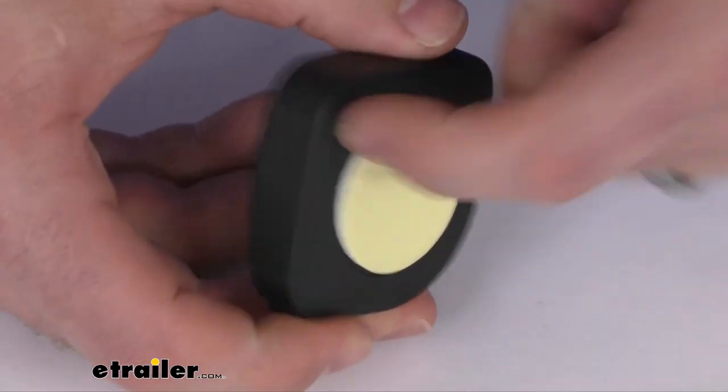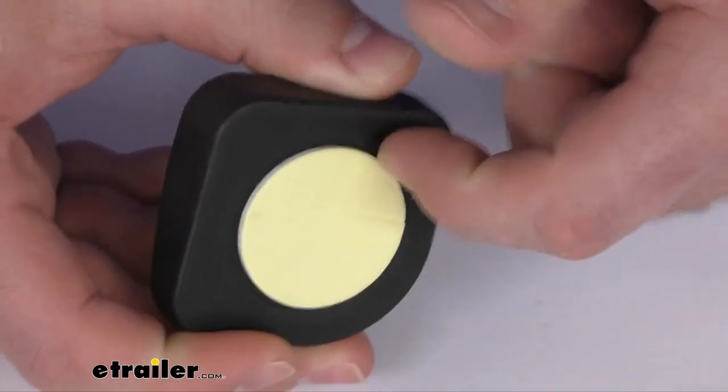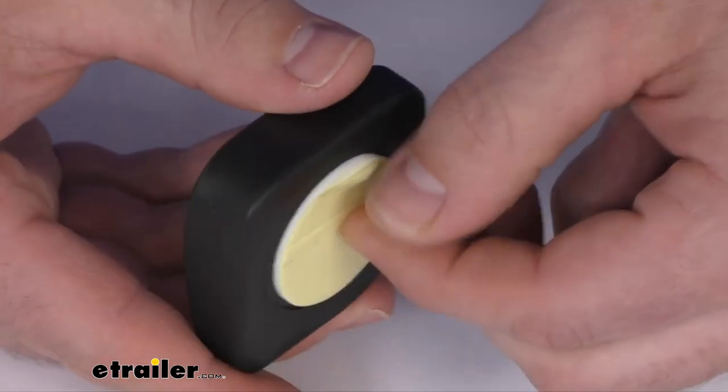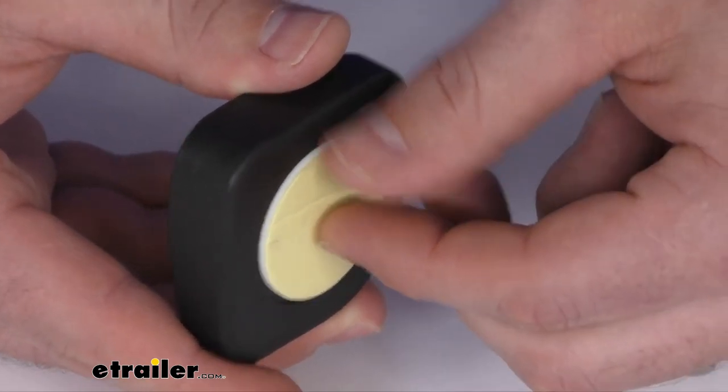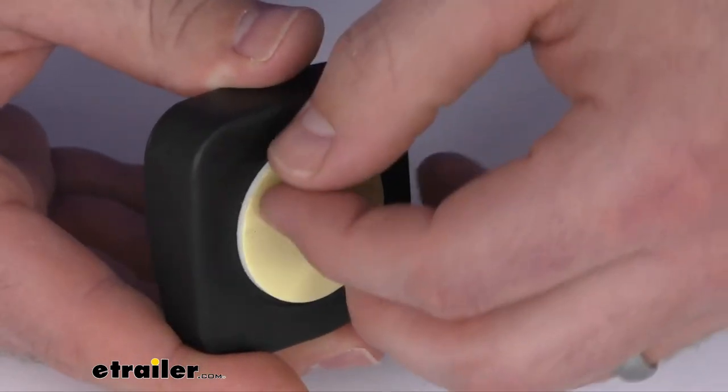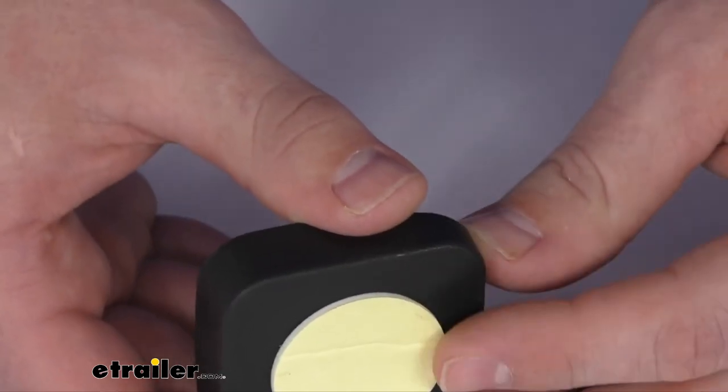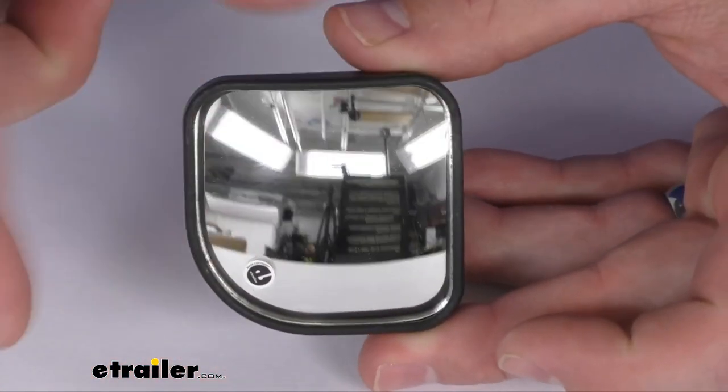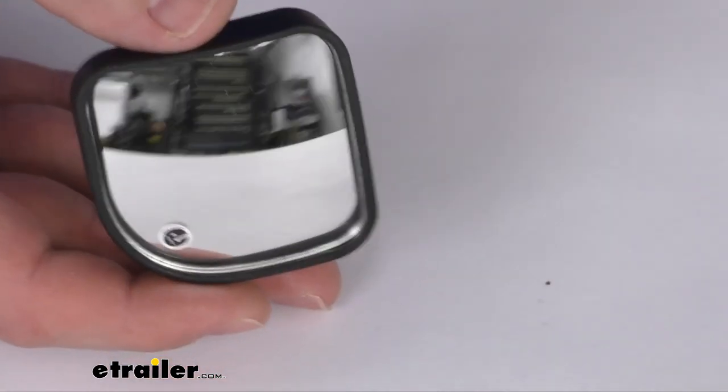This does have a sturdy corrosion resistant black plastic housing. You can see on the back side here we've got this simple peel and stick installation option, so we can very easily just pull that backing off, stick it onto our factory mirror, and it's going to provide that nice wide angle spotter mirror for us.